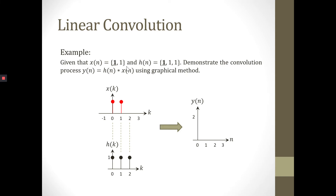In this case, we will shift the value of X. First, we need to fold Xn to get X(0 minus k). In this case, n is equal to 0. This is the first step, which is folding. In the second step, we don't need to shift this one since n is equal to 0.